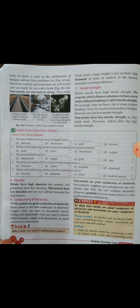Density: metals have high densities, but sodium and potassium have low densities among metals. Non-metals have low densities and are very soft, but diamond has high density.